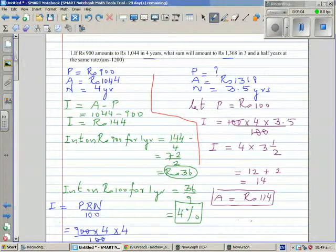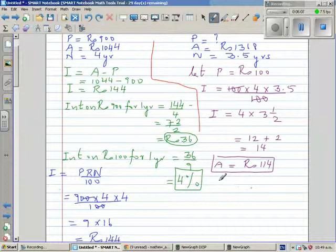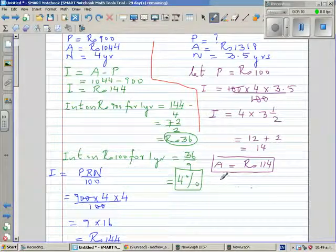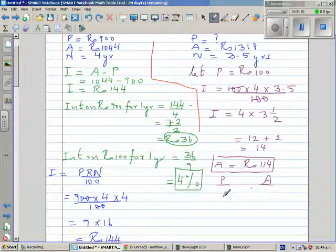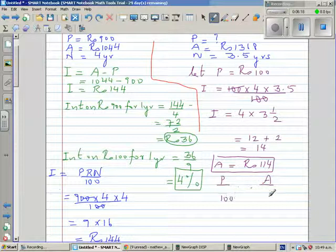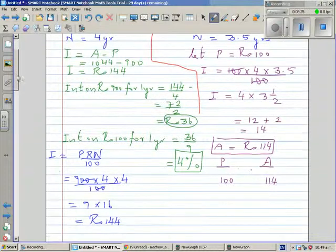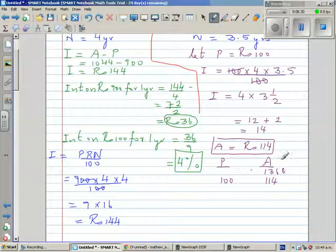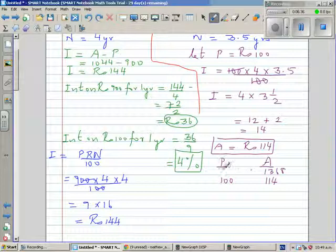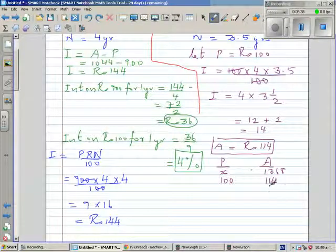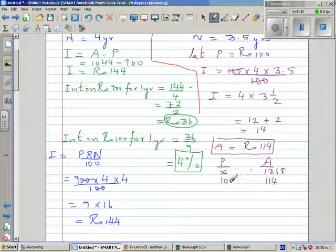So the amount is 114 rupees. Now we're going to use a simple proportion. Let's make two columns. Let's write, we want to find principle, principle and amount. So we know when principle was 100, it became at the rate of 4%, 114. But we know the amount that we have is 1,368.